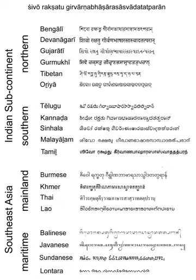Abugidas include the extensive Brahmic family of scripts of South and Southeast Asia, Semitic Ethiopic scripts, and Canadian Aboriginal syllabics. As is the case for syllabaries, the units of the writing system may consist of the representations both of syllables and of consonants. For scripts of the Brahmic family, the term akshara is used for the units.